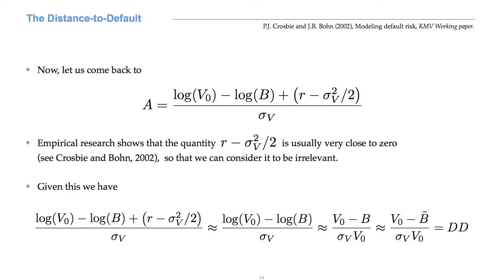But the difference of log V0 and log B is approximately equal to V0 minus B over V0. If we substitute B with B tilde, which is the threshold used by Moody's KMV, we have that our term A can be approximated by the distance to default.